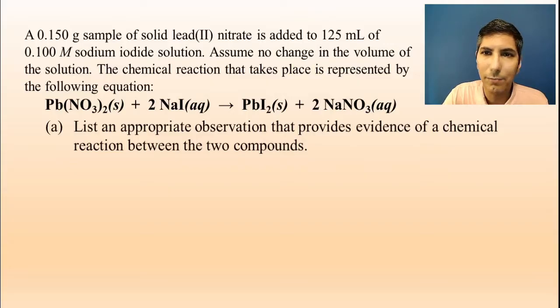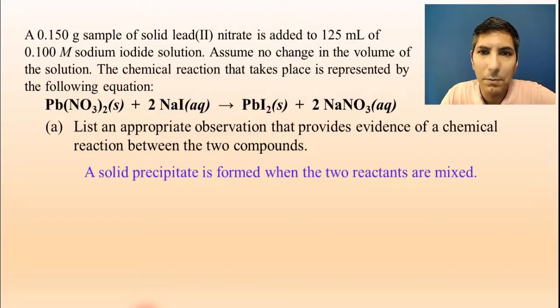Part A, and this is a five-part question, part A says list an appropriate observation that provides evidence of a chemical reaction between the two compounds. Well, one thing that we can notice is that we're taking a solid and we're adding it to an aqueous solution, and one of the products is a solid. That's called a precipitate. So that would be one fairly major observation that you would want to point out, that we're going to make a solid precipitate whenever these two reactants are mixed.